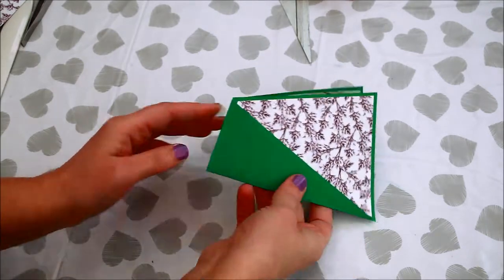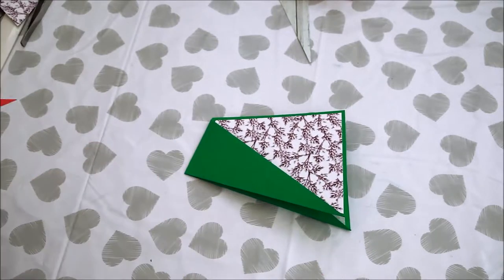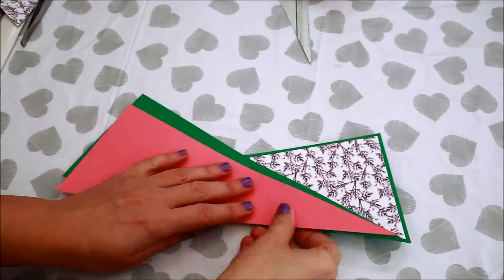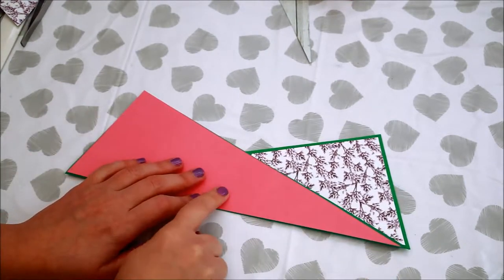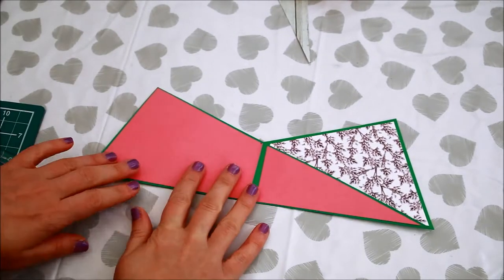Next, mat the exterior of the card. You can use one piece of paper or cut it in half to have separate mats for the front and the back of the card. I went with the second option.